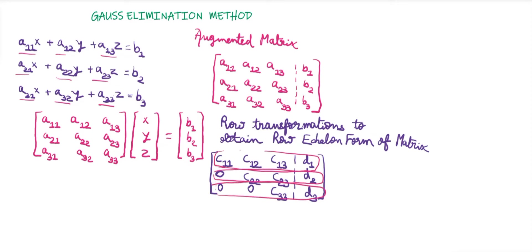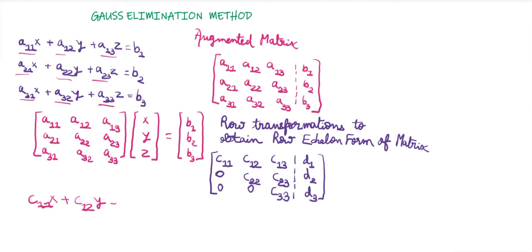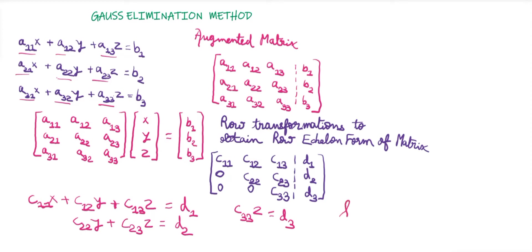From the row echelon form we get three equations. The first equation is C11·X + C12·Y + C13·Z = D1. From the second row: 0·X + C22·Y + C23·Z = D2. From the third row: 0 + 0 + C33·Z = D3.